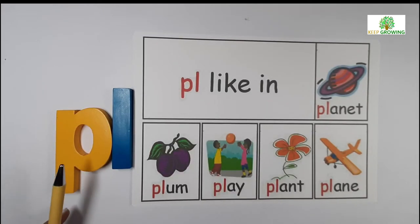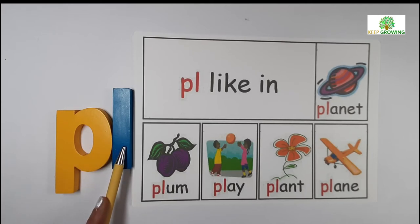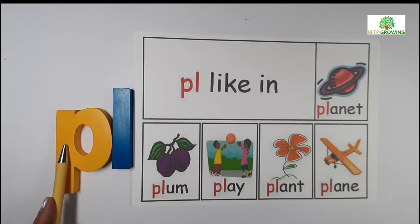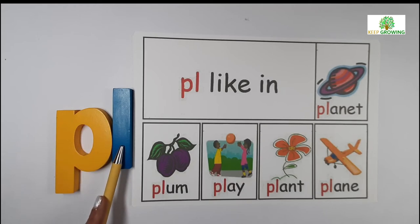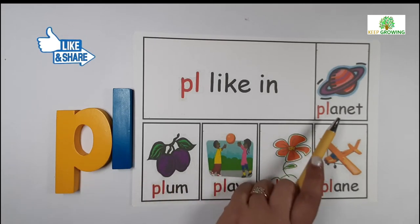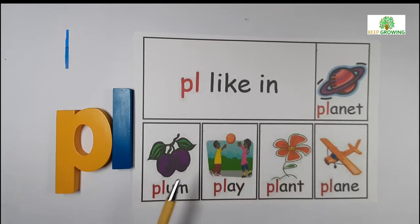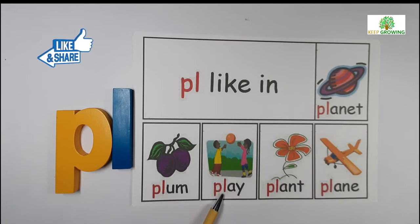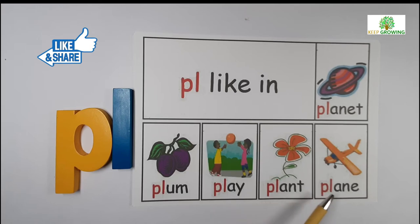Next is the blend of letter P and L. P sounds P and L sounds L. It gives a sound PL. For example: planet, plum, play, plant, plane.